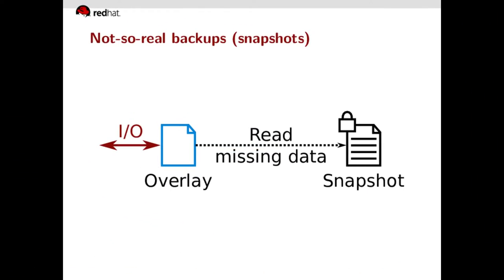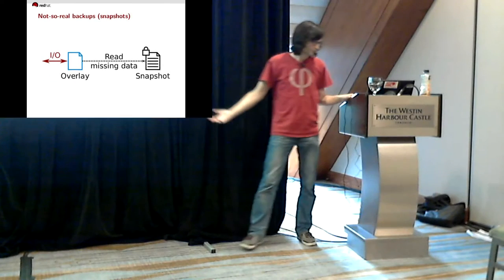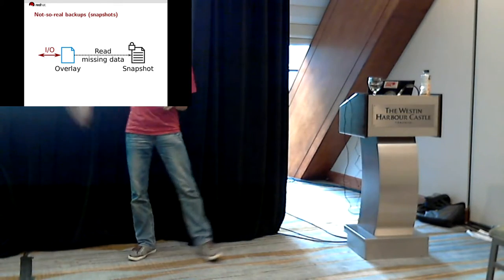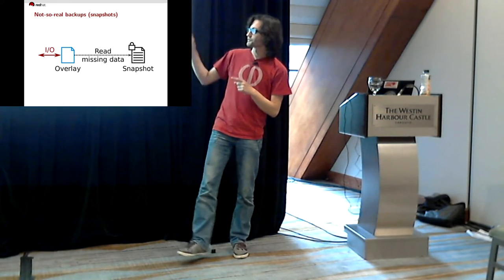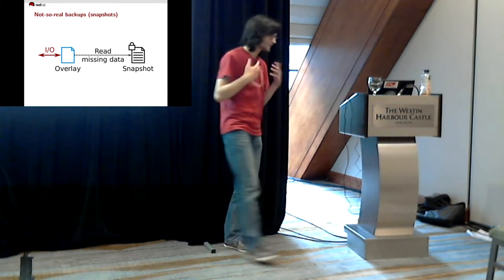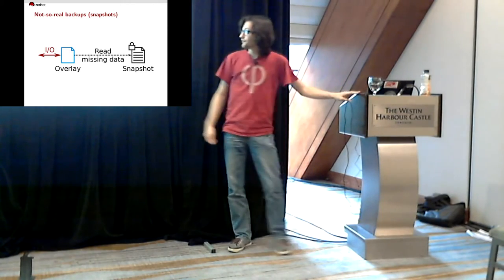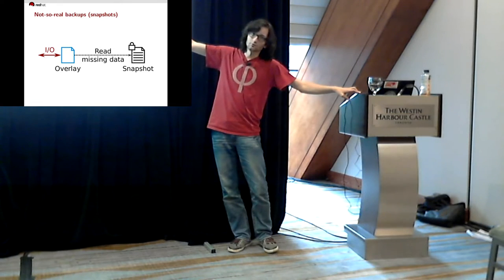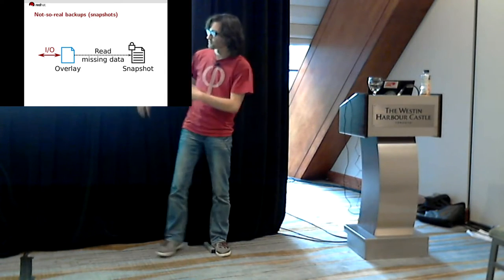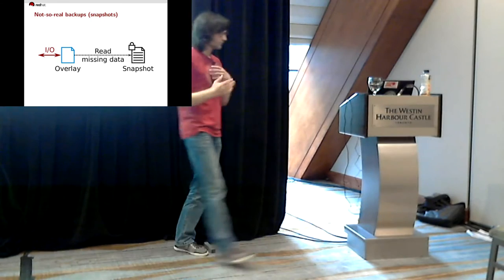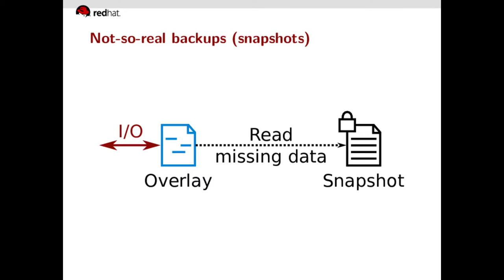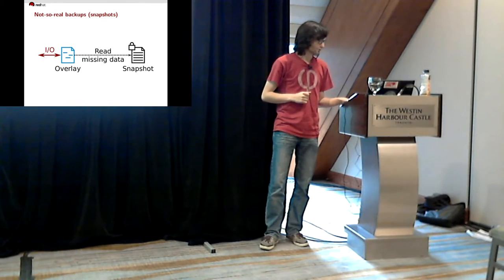A snapshot works like this: you have some file currently in active use by I/O operations. When you take the snapshot, you replace it atomically with an overlay file, which is completely empty. Whenever you try to read from the overlay file, all read operations get redirected to the snapshot because the overlay is empty so far. Therefore, the overlay appears to be exactly the same as the old file, which is now the snapshot. The snapshot is no longer written to — it's locked, frozen in time. Everything now goes through the overlay.